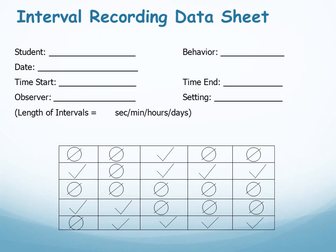Here's an example of a recording form with a check mark indicating that the identified behavior was displayed during an interval, and a slash mark through the circle indicating that the behavior did not meet the criteria during that interval. You can pause the podcast now to compute the percent of intervals in which the behavior was displayed.